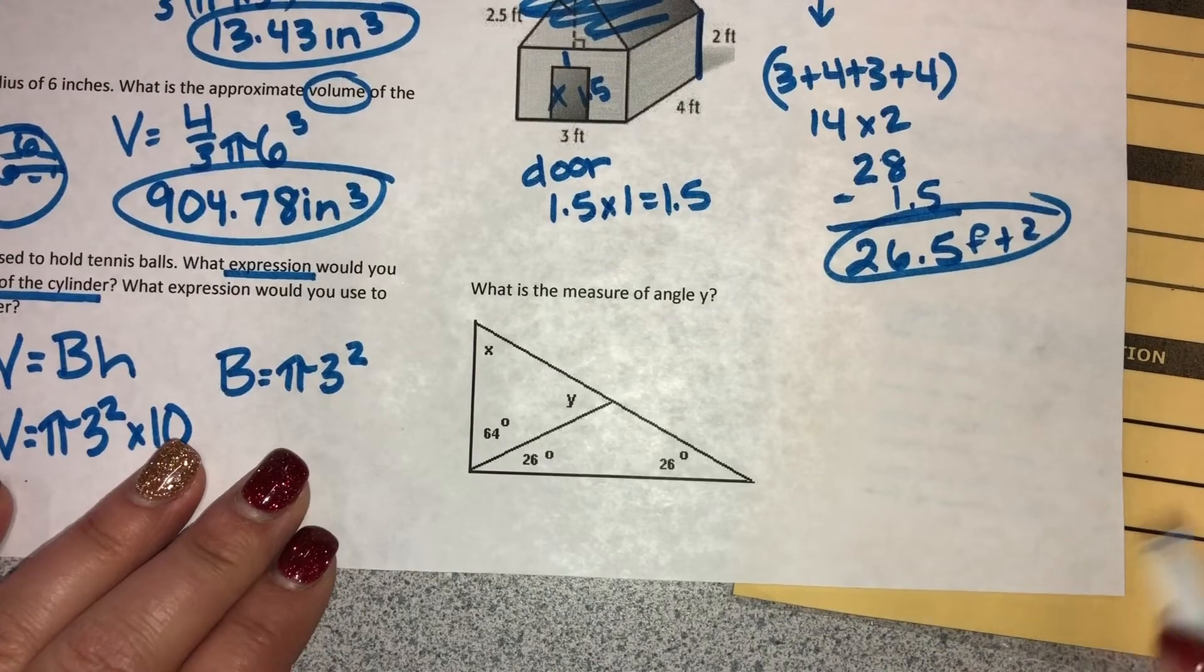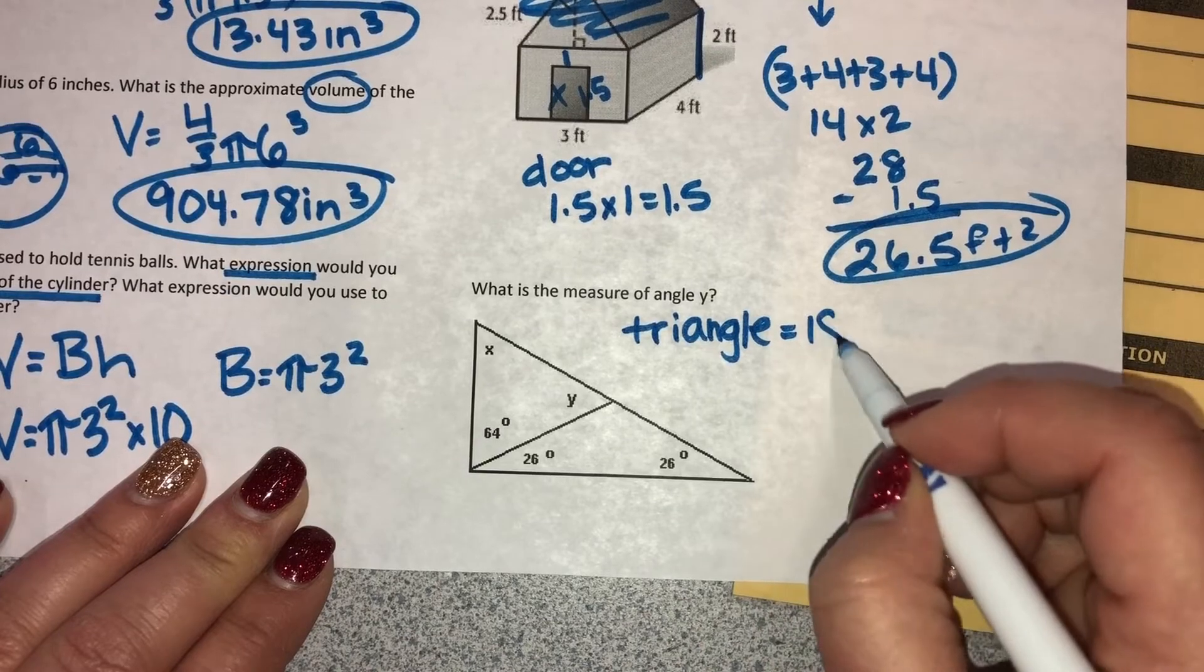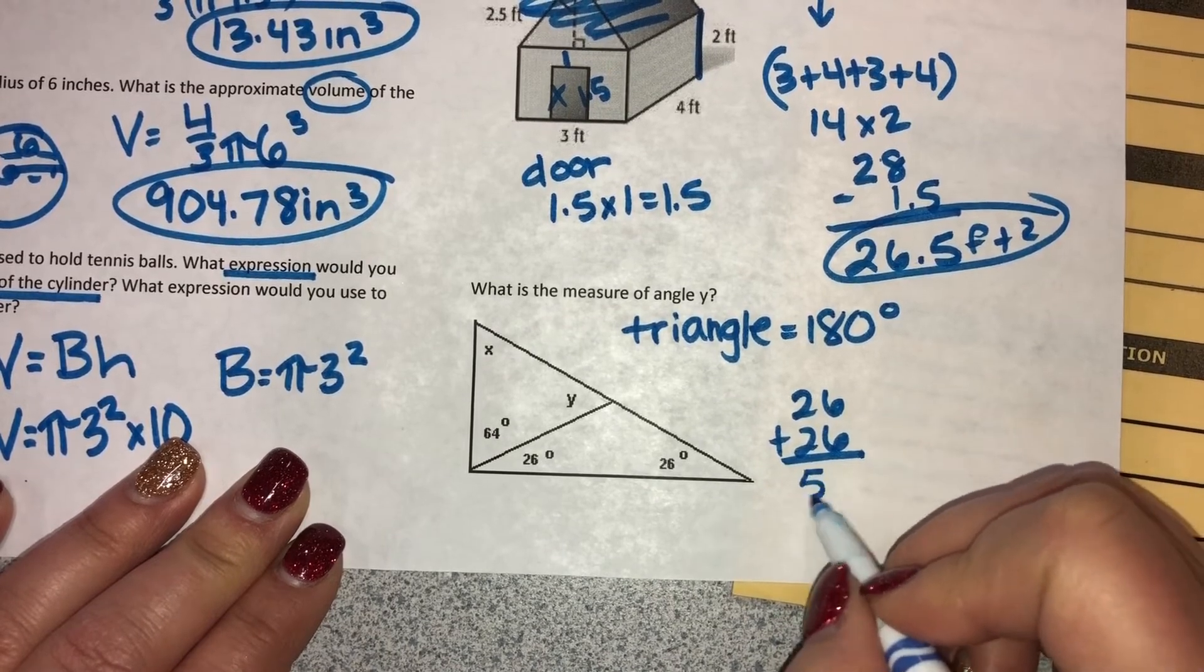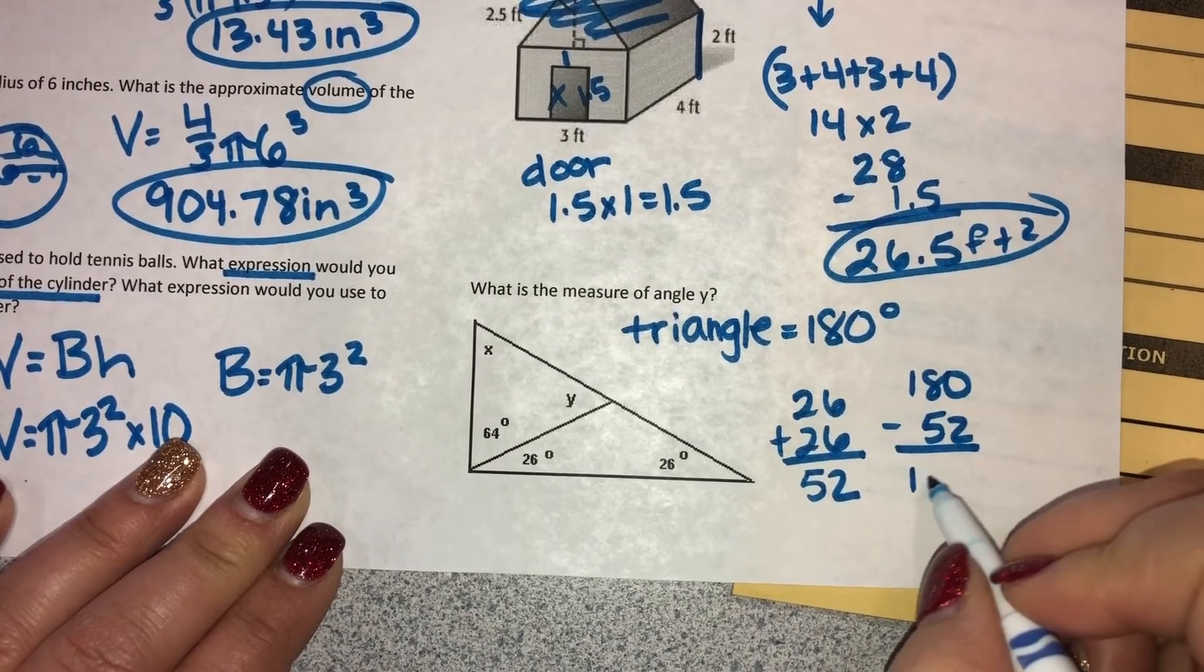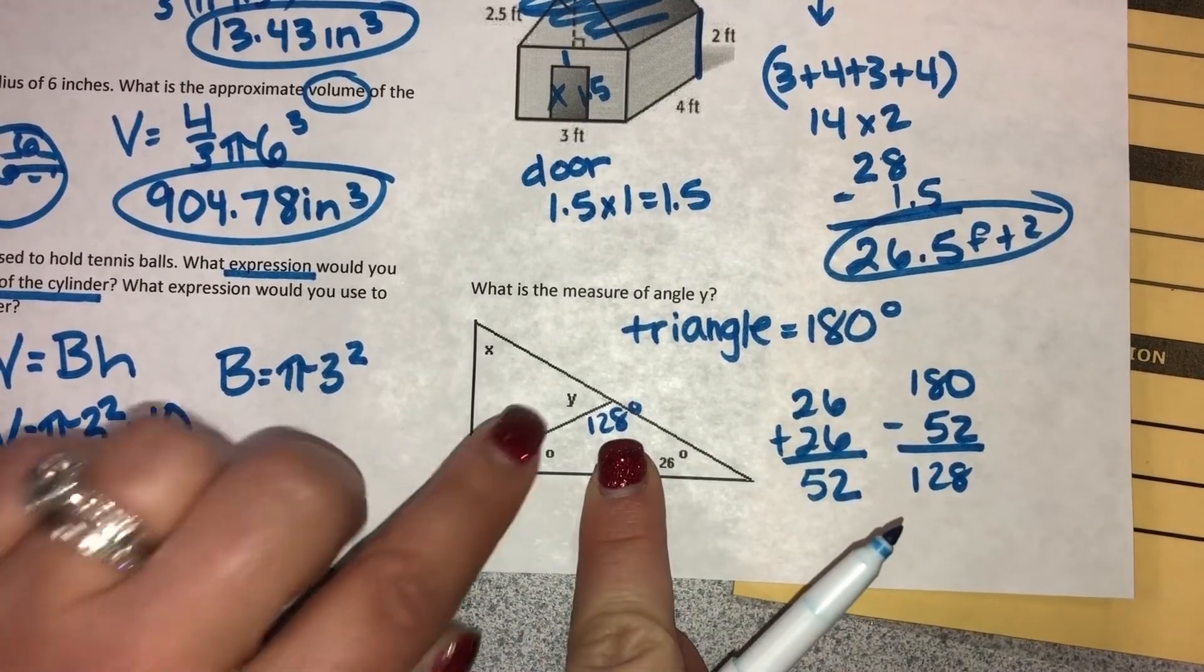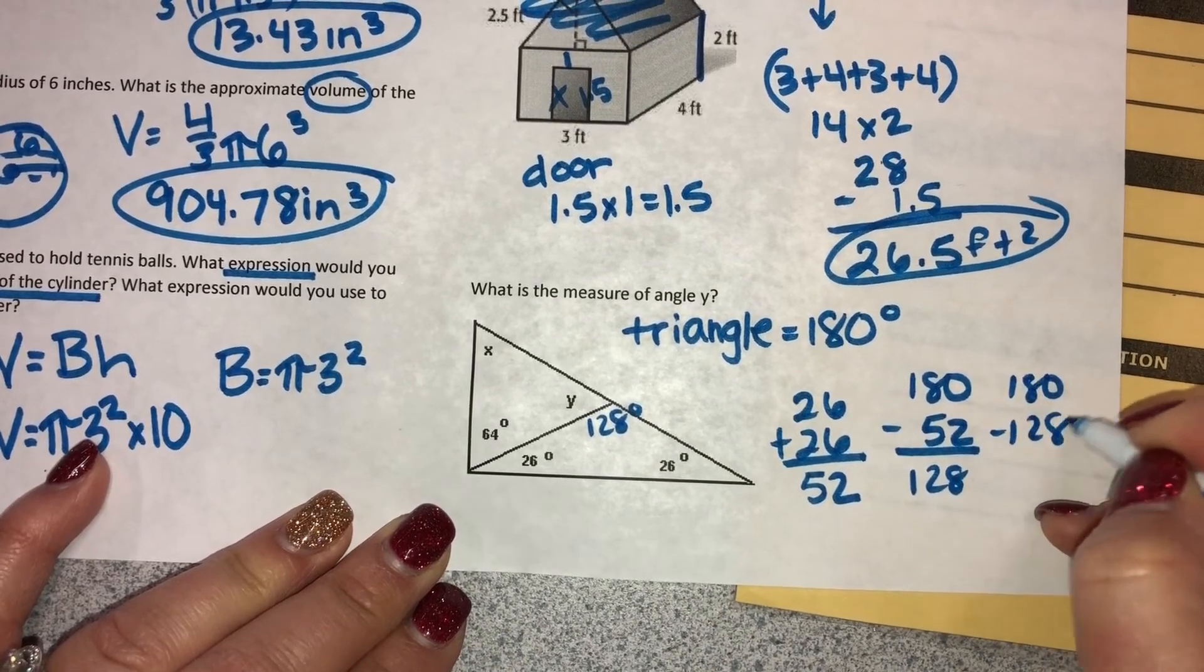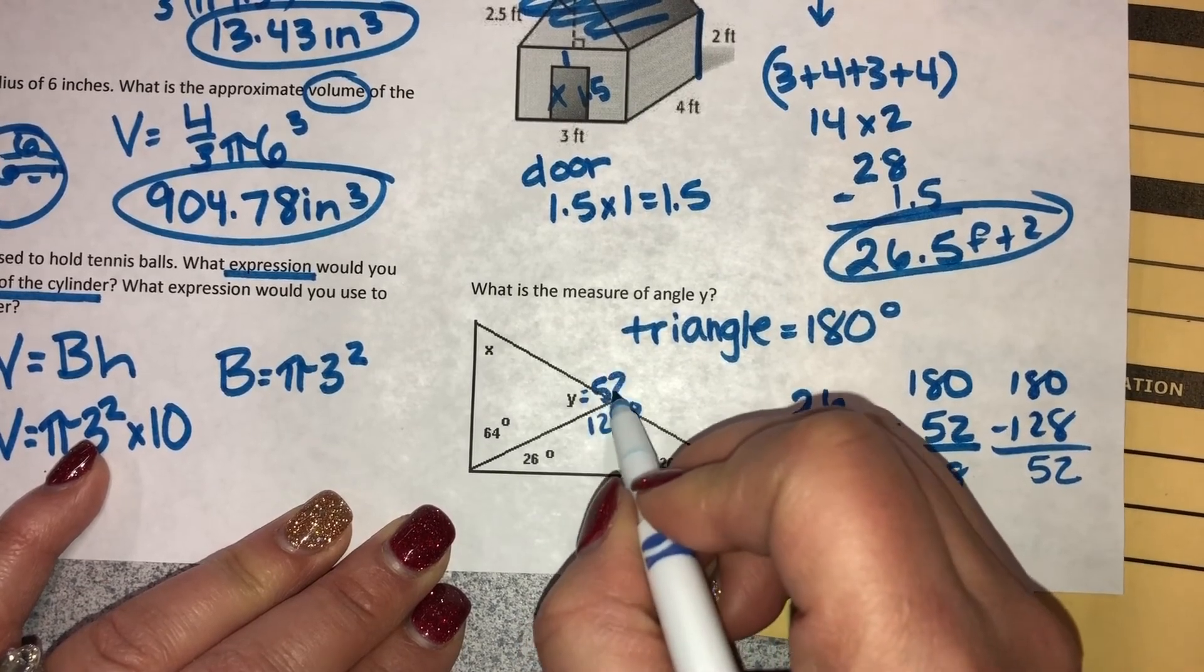And then the last question: what is the measure of angle Y? So we know that in a triangle, all the angles have to add up to 180 degrees. So I have 26 and 26 already, which gives me 52. And then I'd have to take that away from 180 to give me 128. So the measurement of this angle is 128 degrees. We also know that a straight line has to add up to 180 degrees. So if I were to take 180 and take away 128, that leaves me with 52. So angle Y equals 52 degrees.